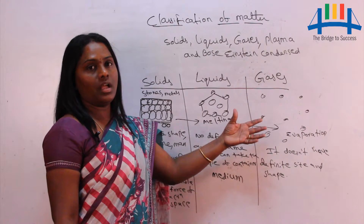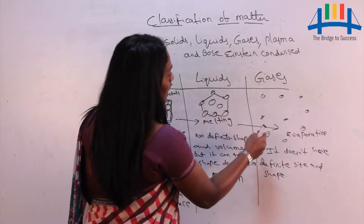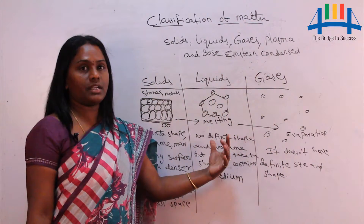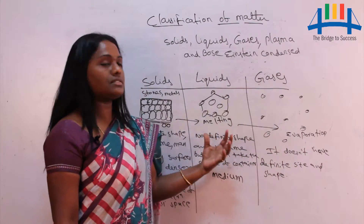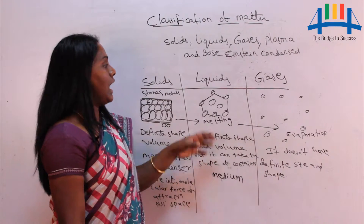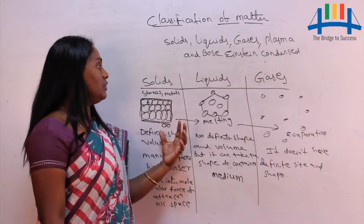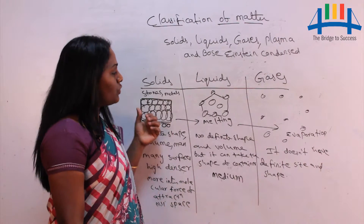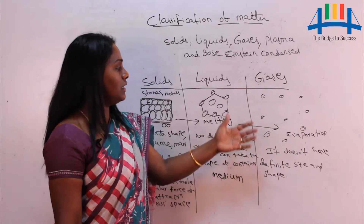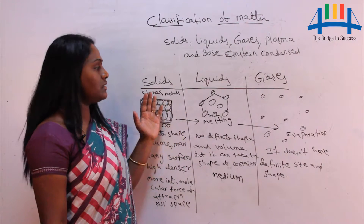After converting liquid to gaseous state, we can also convert gaseous state back to liquid state. That process is called condensation — conversion of gaseous form to liquid form. We can also convert liquid state to solid state by removing heat energy instead of applying it. So condensation refers to conversion of gaseous to liquid, or liquid to solid state.